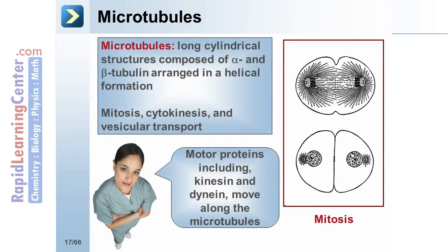Microtubules are long cylindrical structures composed of alpha and beta tubulin, arranged in a helical formation. The alpha and beta tubulin polymerize to form a dimer, and each dimer has two bound GTP. Microtubules grow slowly, collapse quickly, and are involved in a number of cellular processes, including mitosis, cytokinesis, and vesicular transport.